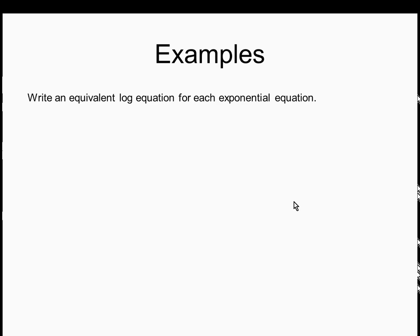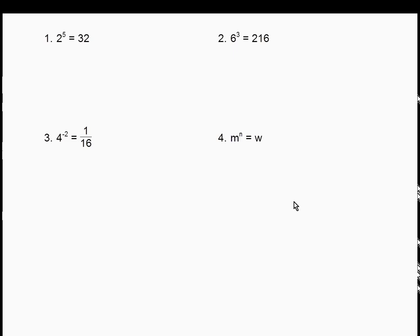Let's now go the other way — writing an equivalent log equation for each exponential equation. Notice we really can't verify that the log equation is true; it's the exponential equation that's true. The same pattern applies. The base of the log must match the base of the exponential. Whatever is the exponent is what the log equals. And the other number is what you're taking the log of — remember, you must take the log of something.